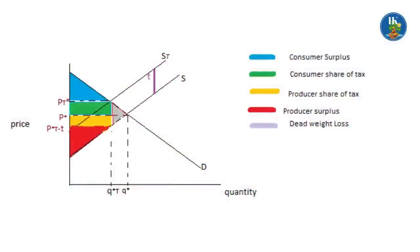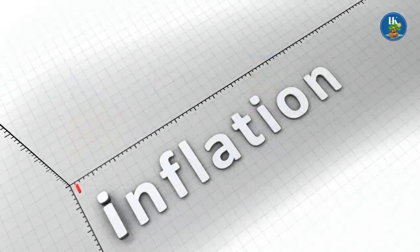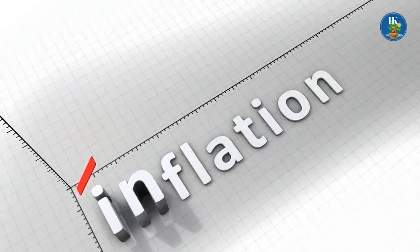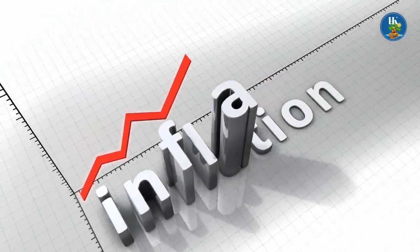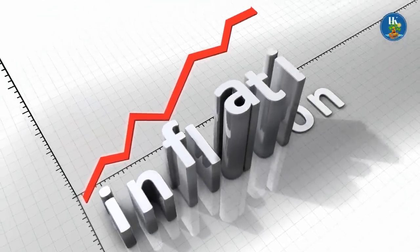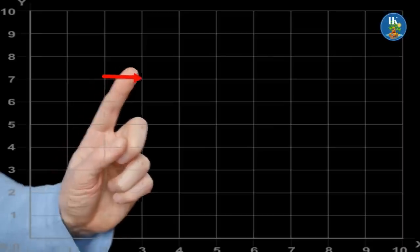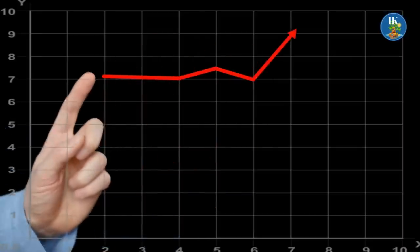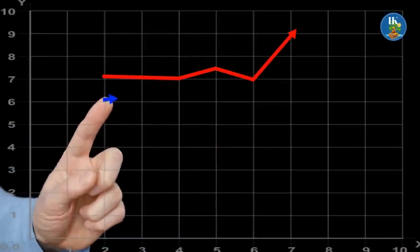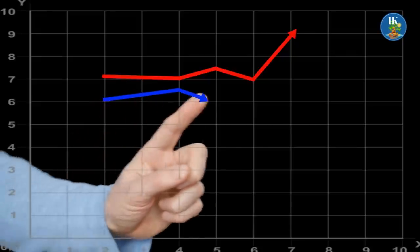Furthermore, price increases in the supply and demand model are one-time occurrences that signal a change from one equilibrium to another. Inflation, on the other hand, denotes a continual increase in prices. If inflation occurred for a year before ceasing, it would no longer be considered inflation.